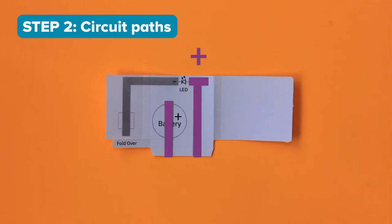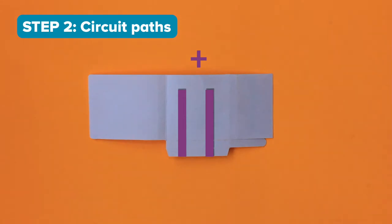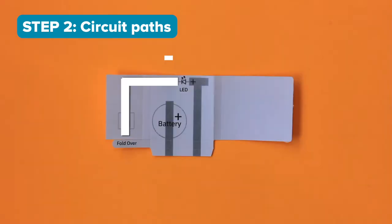Step 2. This is your circuit. This is the positive path of your circuit, which also continues on the opposite side of your template. This is the negative path. When the path is closed, it creates a circle for electricity to flow. This is how your LED lights up.